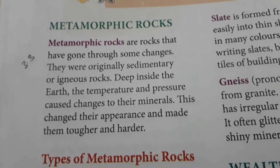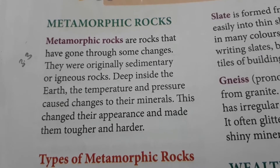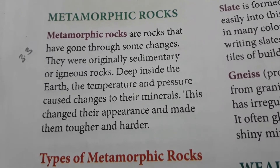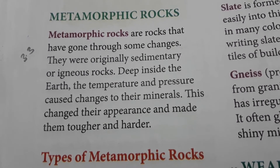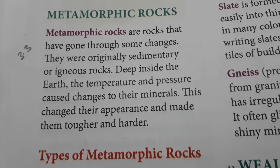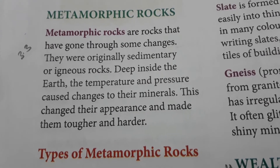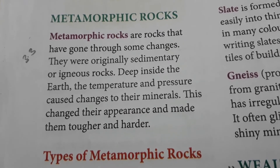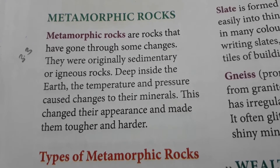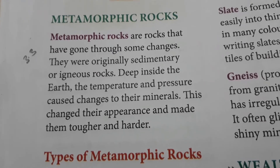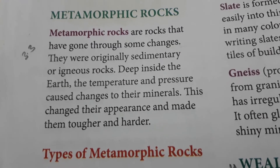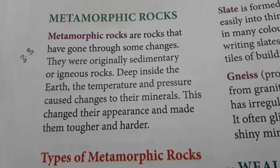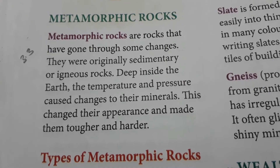Metamorphic rocks are rocks that have gone through some changes. They were originally sedimentary or igneous rocks. Deep inside the earth, the temperature and pressure caused changes in their minerals. This changed their appearance and made them tougher and harder. Sedimentary rocks form through deposition, and igneous rocks form from molten lava.